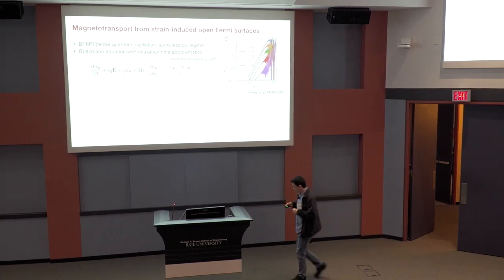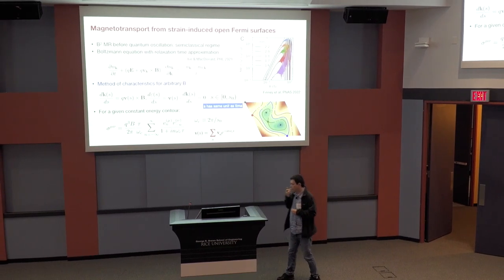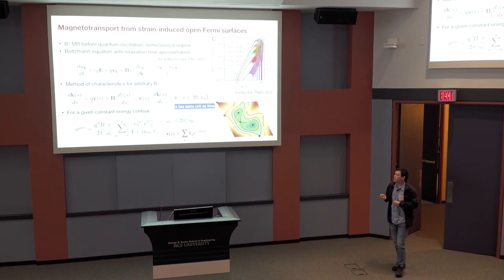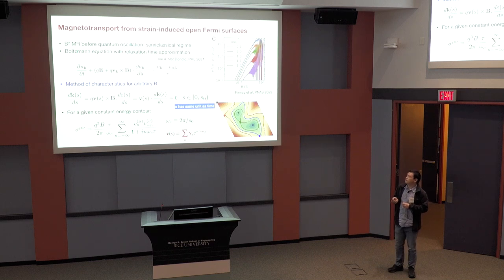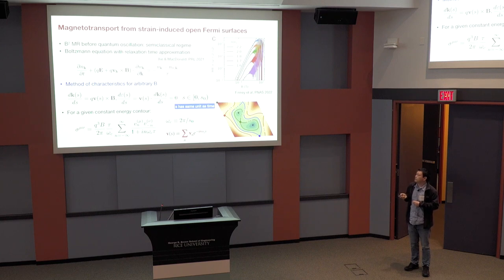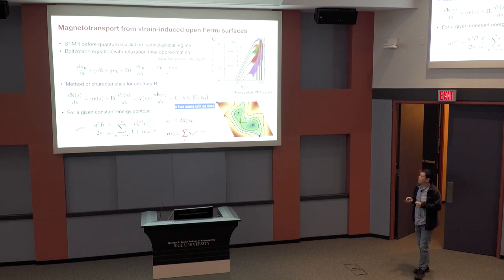But to solve this equation in arbitrary magnetic field, we resort to this method called the method of characteristics. So essentially, we're supposed to find a trajectory that's the semi-classical motion of the electron under the Lorentz force given by the magnetic field. And one can easily show that this S parameter parameterizes a constant energy contour.